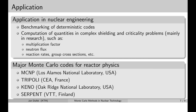The most established one is MCNP, written in Los Alamos, and it has a long history. There are probably about twenty codes which are on a very similar level to MCNP, written in different institutions all around the world. This is just a very short list — only four examples. Among them are Tripoli, written in Saclay; Keno, from Oak Ridge; and Serpent, from VTT. Serpent is a relatively new code, and we are going to work with the Serpent code.